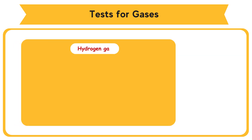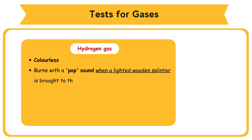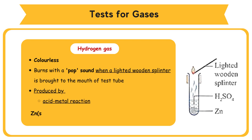Hydrogen gas is a colorless gas that burns with a pop sound when a lighted wooden splinter is brought to the mouth of the test tube. It is produced by an acid-metal reaction: Zn (solid) + H2SO4 (aqueous) → ZnSO4 (aqueous) + H2 (gas).